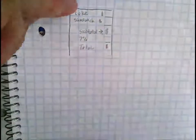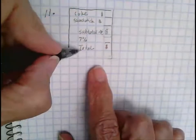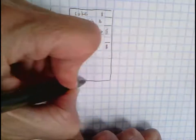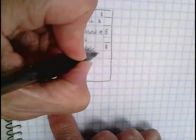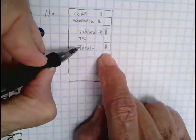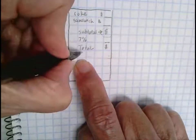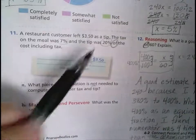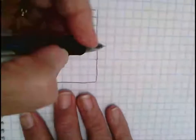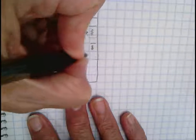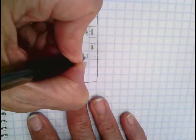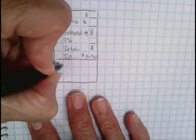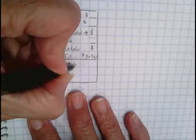So they bring this to you and put it on your table, and this is the amount that you owe. Well, in our book, they indicate that you decide to leave a $3.50 tip. So the tip that you leave is $3.50.